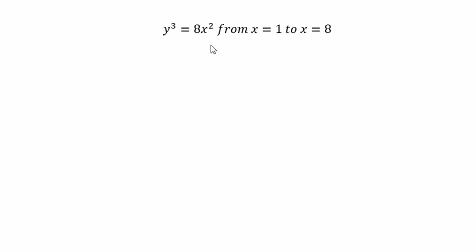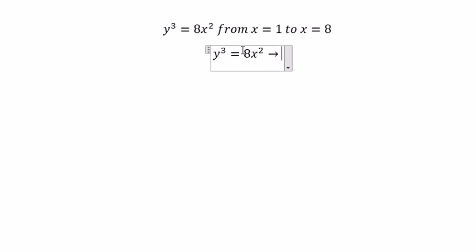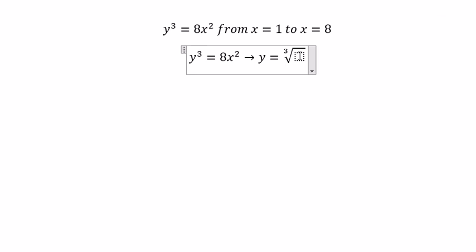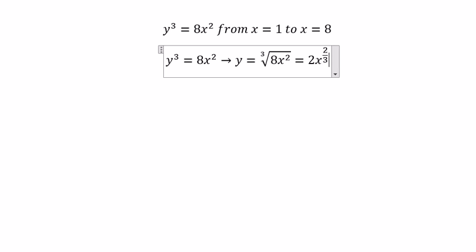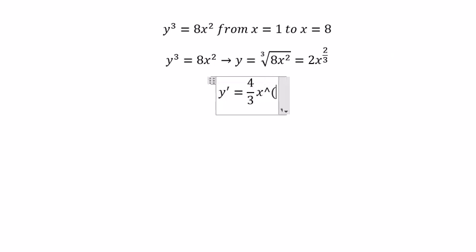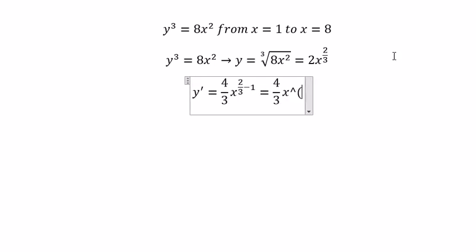Hello everybody, today I will talk about calculus. The topic today is about arc length. We have y to the power of 3 equal to 8x squared. We put the cube root on both sides, so we get y equals 2x to the power of 2 over 3. Next we need to find the derivative of the function, so we get 4 over 3 times x to the power of 2 over 3 minus 1, which gives us 4 over 3 times x to the power of negative 1 over 3.